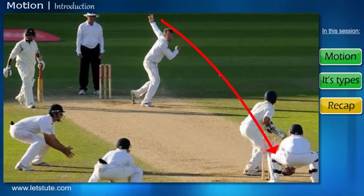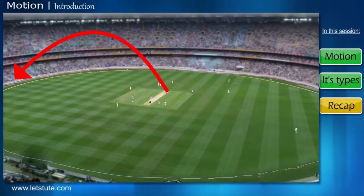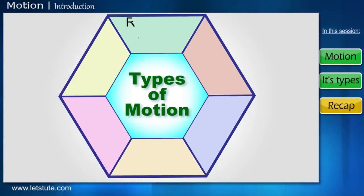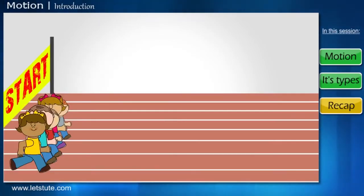The game of cricket is a good example. When we bat for a six, we notice that the ball follows a curved path as it crosses the boundary. Now that we know what rectilinear and curvilinear motion is, let's look at the scenario of a race and see what we can learn from this scenario.